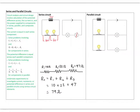If we wanted to work out the voltage, and we knew the current flowing through the circuit, we could use Ohm's law. Current equals V over R, so rearranged: V = I × R. If we know the current, we can work out the voltage drop across each of those resistors in the circuit.